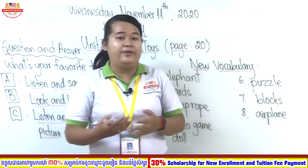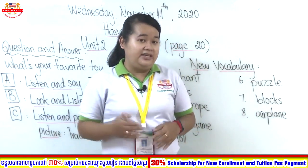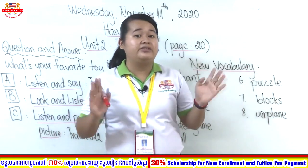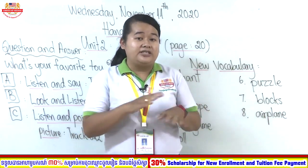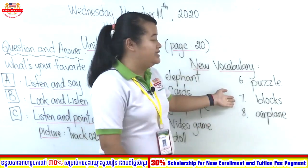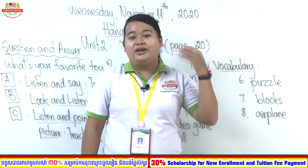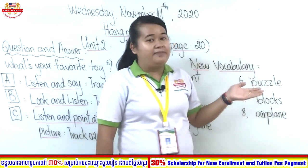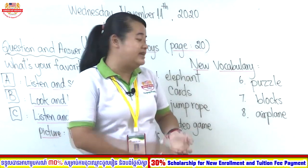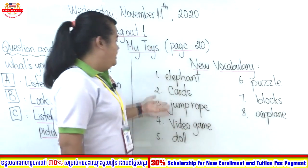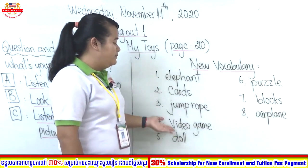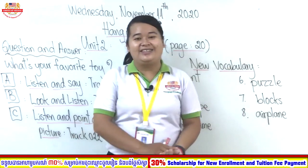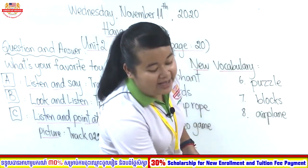Number six is puzzle. Puzzle is something you need to arrange to complete a picture — small pieces that are separated and you need to combine them to make the complete picture. Number seven is blocks, which you can also see in your book. Number eight is airplane. So today we have eight words: elephant, cards, jump rope, video game, doll, puzzle, blocks, and airplane.